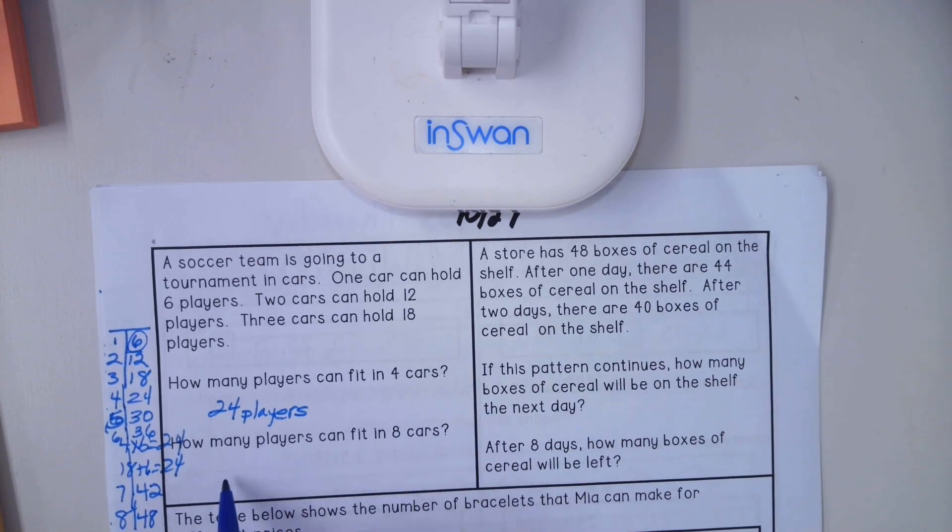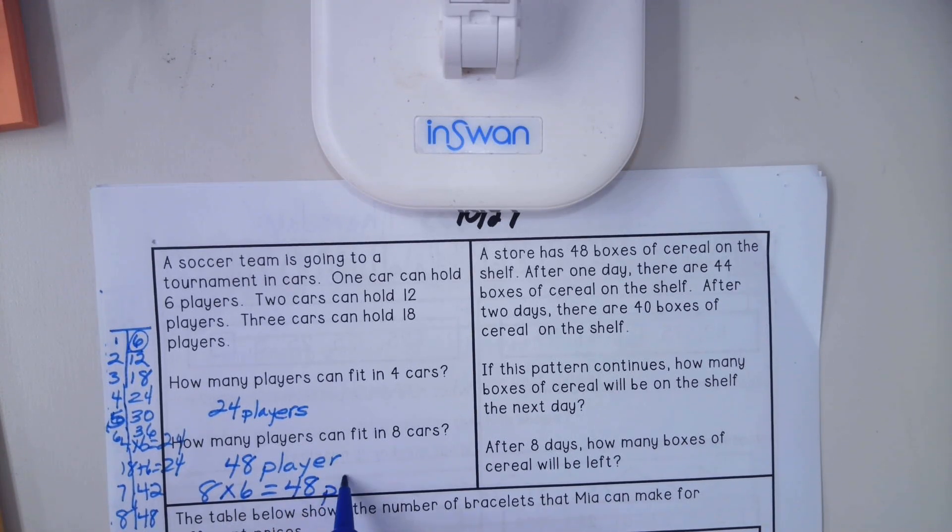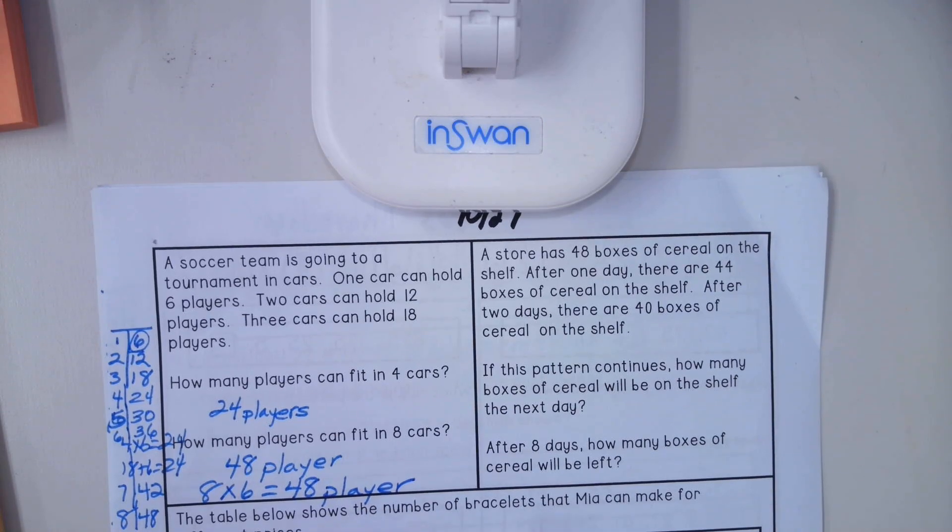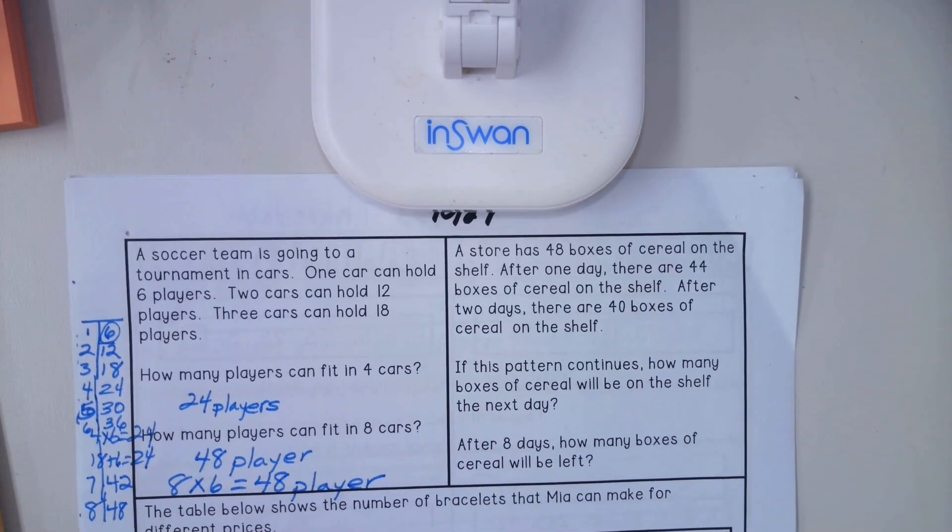You could do your six table here, 48 players, or you could say eight times six equals 48. Okay, your job is to do problem two on your own.